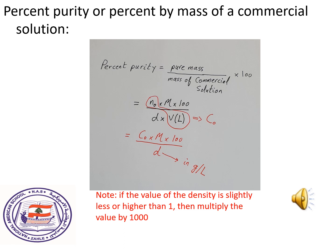The percent purity, or percent by mass, of a commercial solution equals the pure mass divided by the mass of the commercial solution, times 100. Converting mass into moles: pure mass becomes n₀ times molar mass. The mass of the commercial solution becomes density times volume in liters. Since n₀ divided by V(L) equals C₀, the formula becomes: percent purity = (C₀ × molar mass × 100) / density.